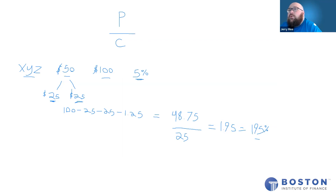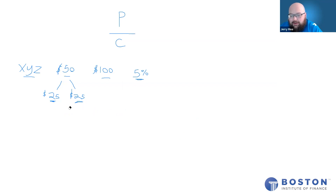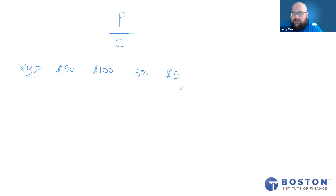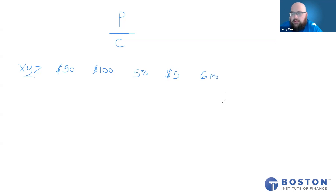So that is a level two holding period return question. Now let's take it to the next level — level three, the most difficult it could possibly be. We're going to combine all of this together. Our client still bought XYZ at $50, still sold it at $100, still bought it on margin at 5%. But now let's also add in they got $5 in dividend payments during their holding period. And to make it extra tricky, they didn't hold XYZ for a full year — they only held it for six months.